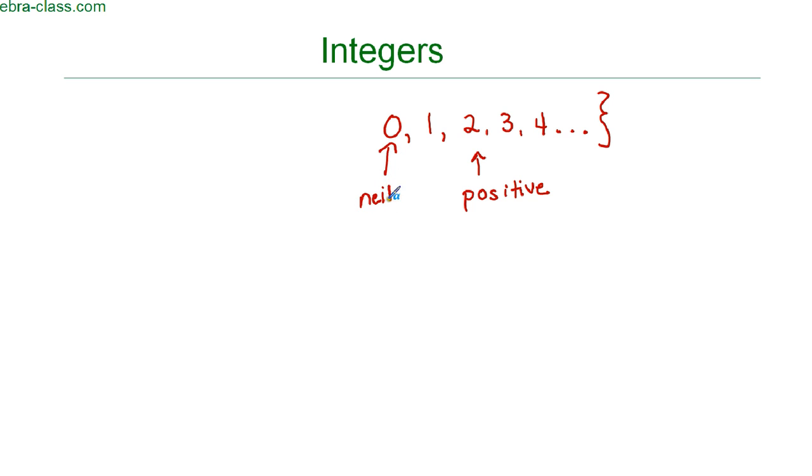But the numbers 1, 2, 3, and 4 are your positive integers. These integers are considered integers because they're whole numbers. They are not fractions, and they are not decimals. And integers must be whole numbers.